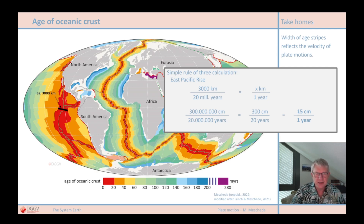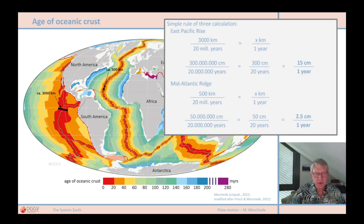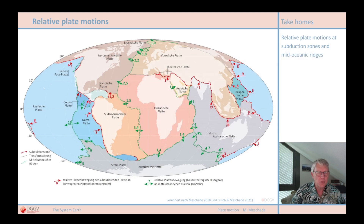This is exactly the rate given for the East Pacific Rise at its rotation equator. Further north and further south, the velocity decreases with increasing distance from the rotational equator, as explained in chapter 4.3. The same red stripe at the spreading center of the Atlantic, however, is much narrower. For the Mid-Atlantic Ridge: 500 kilometers corresponding to 20 million years. Performing the same calculation gives a result of 2.5 centimeters per year, which again corresponds to the known data for the Mid-Atlantic Ridge.